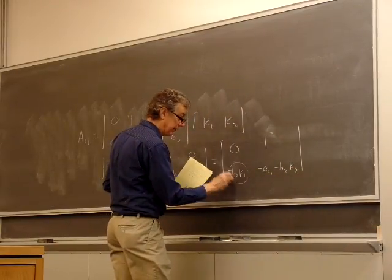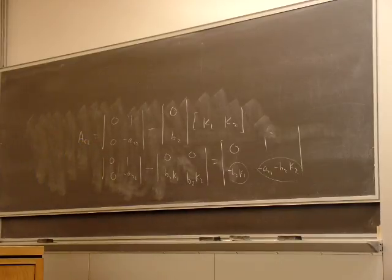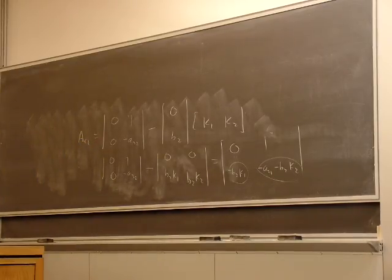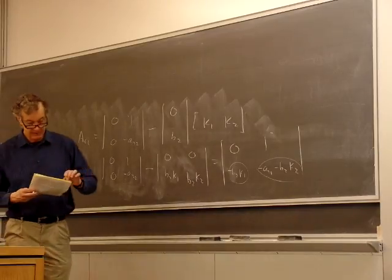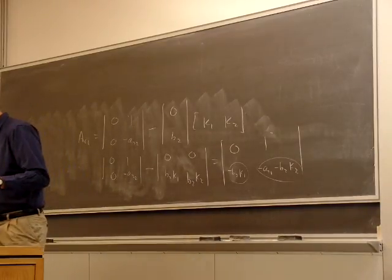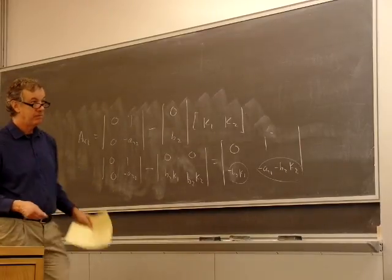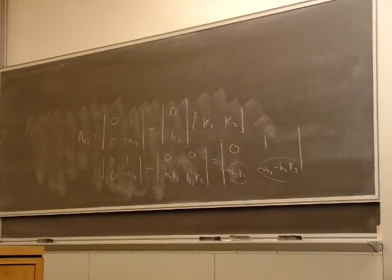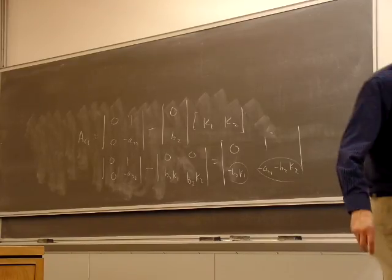We'll do our sums here. So these are the coefficients of our desired characteristic equation, right? That B matrix came from the zero and Kt over J plus B2. I'll call it A22.